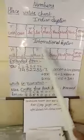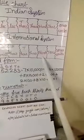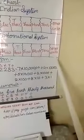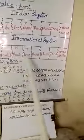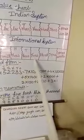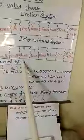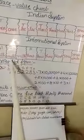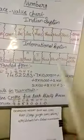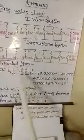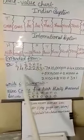In the International system, the ones period includes hundreds, tens, and ones. After that, periods start in groups of three — such as thousands, ten thousands, hundred thousands — and then millions, ten millions, and hundred millions. This is how the place value chart works.